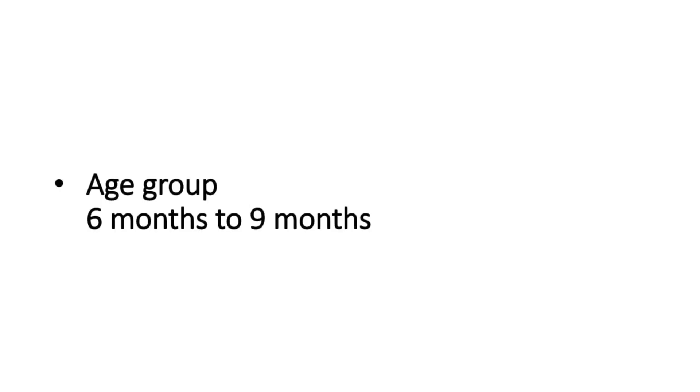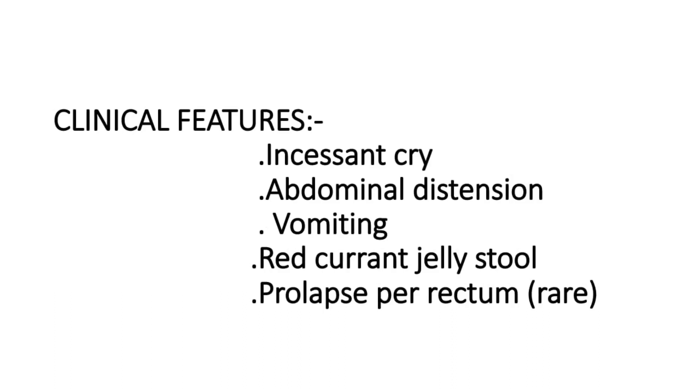The main age group affected is 6 months to 9 months of age, with an incidence rate of 6 per 1000. Clinical features include the child crying continuously due to abdominal pain — this cry is called incessant cry. The child will also have abdominal distension, vomiting, and bleeding per rectum. The stool is red currant jelly-like, which is an important feature of this condition. In some cases there is also prolapse per rectum.